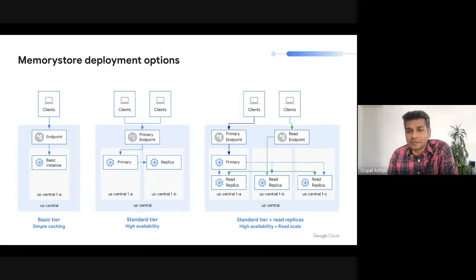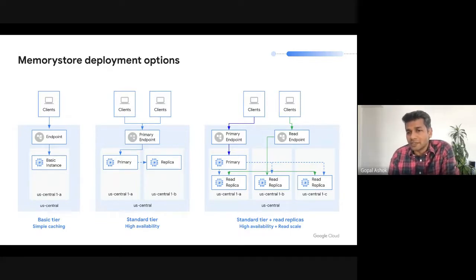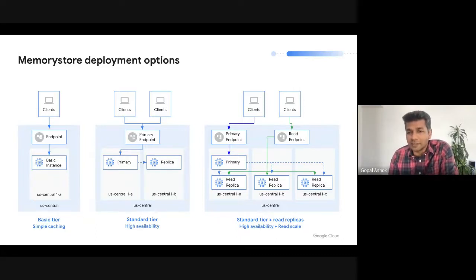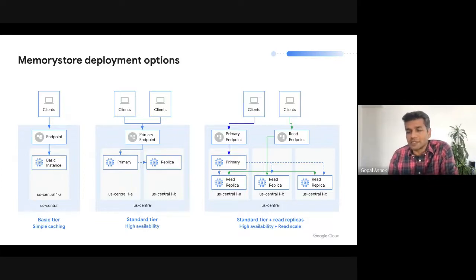If your application requires a highly available Redis instance, we highly recommend that you use standard tier instances. Standard tier instances come with 99.9% availability SLA and can be deployed in two configurations. In the HA configuration, which is the original standard tier instance configuration, instances come with a primary and a single replica deployed across zones, which gives you redundancy from zone failures. Data is asynchronously replicated to the replicas and instances are automatically failed over to the replica within a few seconds, providing applications very minimal downtime. A key thing to note is that since replication is asynchronous and the replication lag can be a few seconds, you can experience some staleness of data after a failover and the application must be tolerant of that.